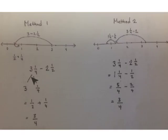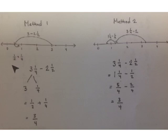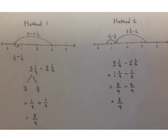Now we're going to look at 3 different ways to solve 3 and 1 fourth take away 2 and 1 half. Starting with the number line, we separate our 3 and our 1 fourth. Start at 3 and take away 2 and 1 half, which gives us 1 half. Then add back in the 1 fourth. Numerically, 3 take away 2 and 1 half is 1 half, plus 1 fourth. Multiply 1 half by 2 over 2 to get 2 fourths, and 2 fourths plus 1 fourth is 3 fourths.